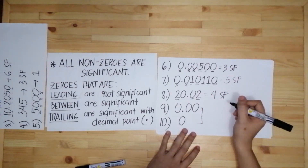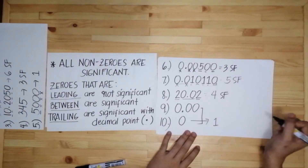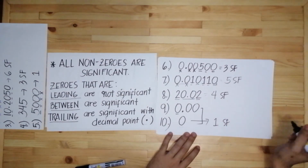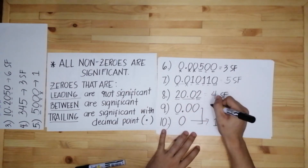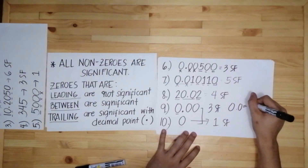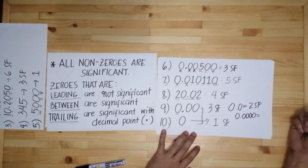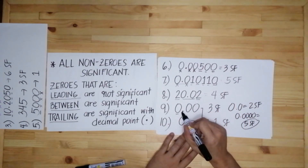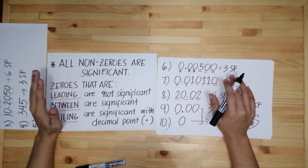Trivia: zero alone — zero itself — is one significant figure. When you have 0.00, it's not leading, not trailing, not in between, so you consider them all as significant. We have three significant figures. Whenever you have 0.0, there are two significant figures. With 0.0000, we have five significant figures in total. Remember: when there are no non-zero numbers — lahat ay zero at may decimal point — you will count them all as significant figures.